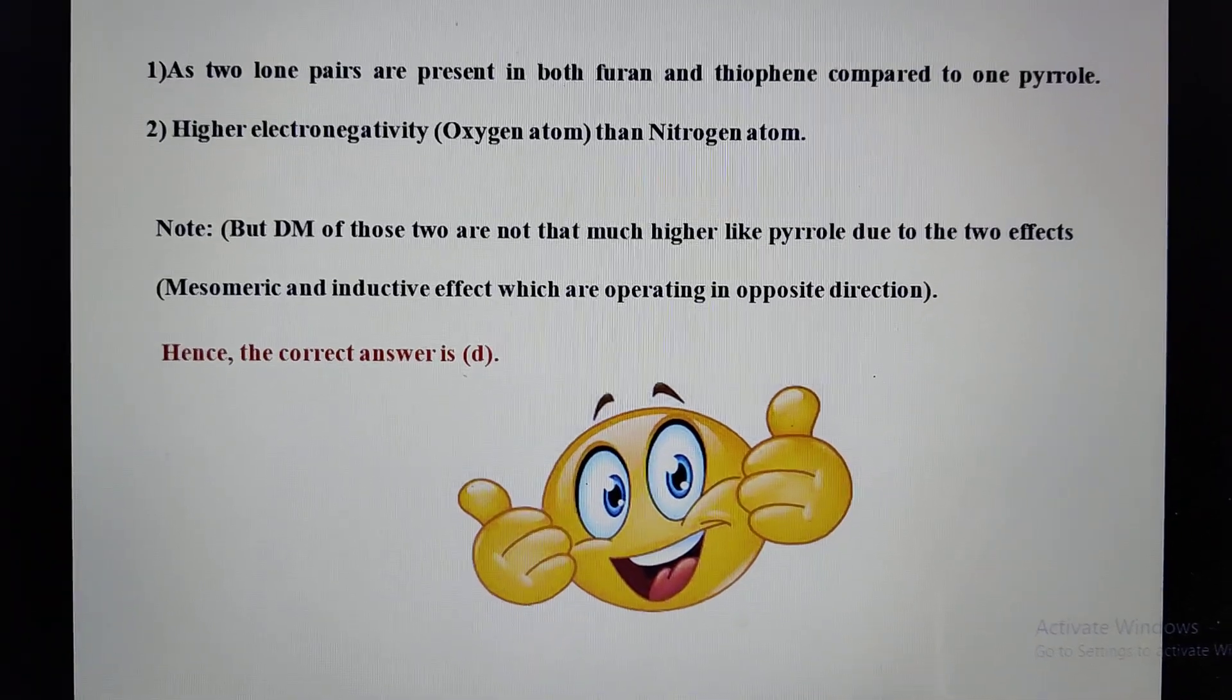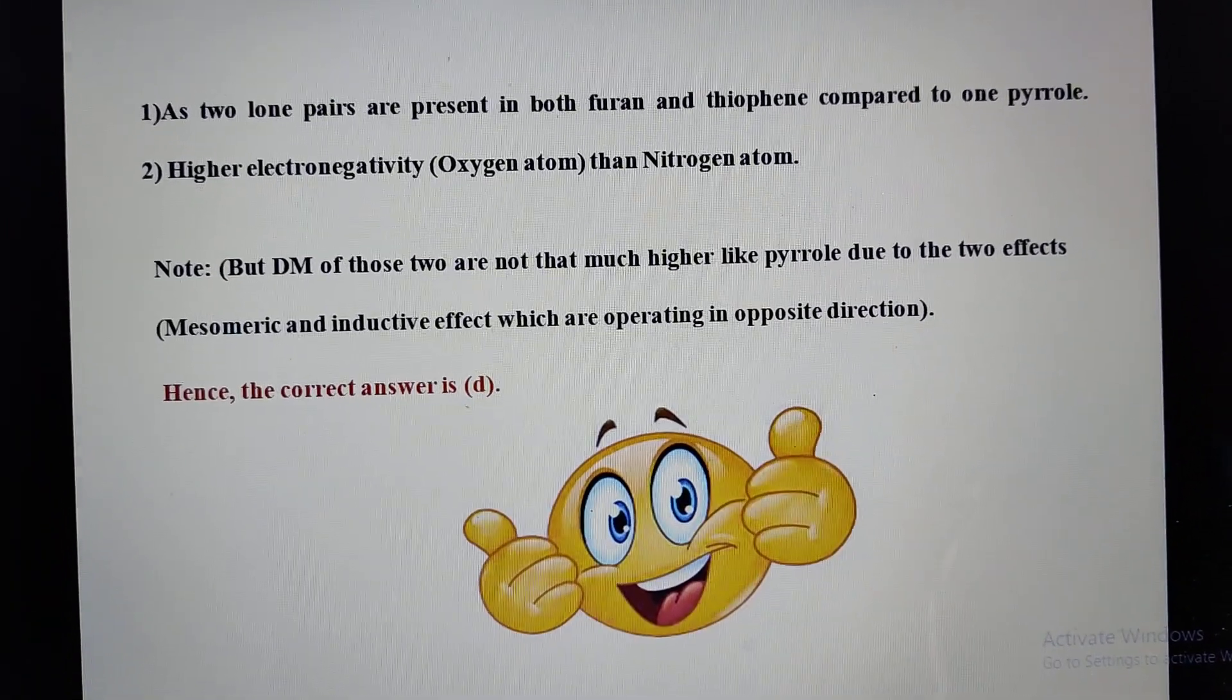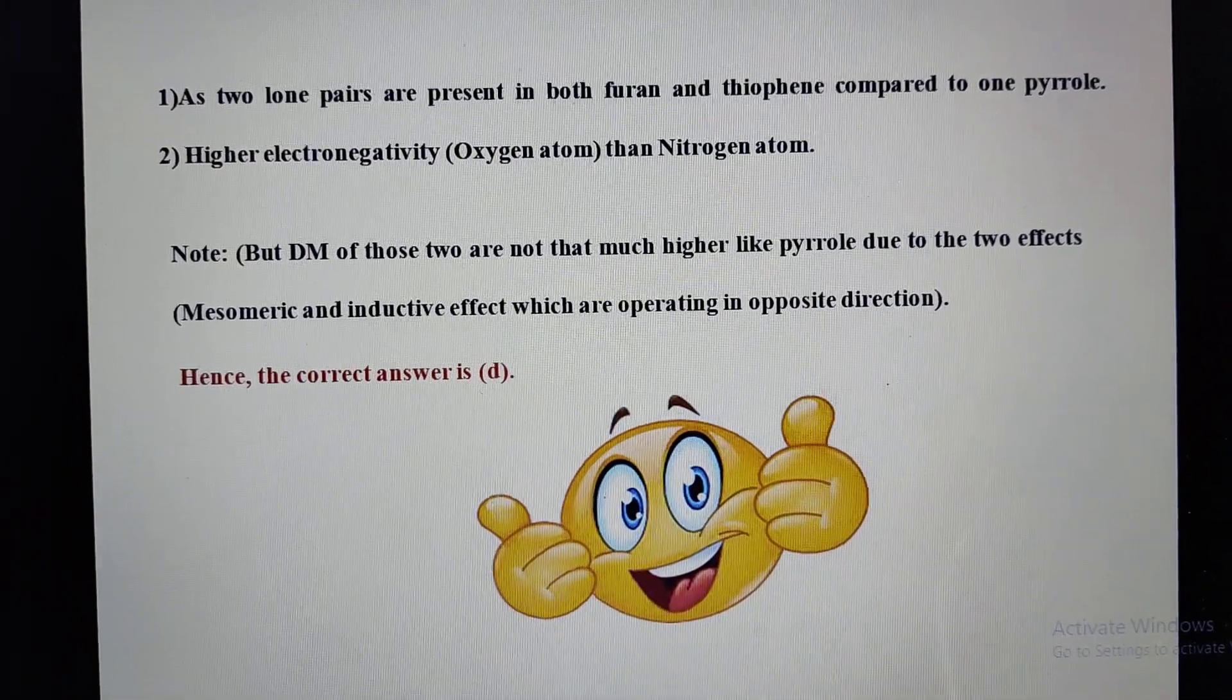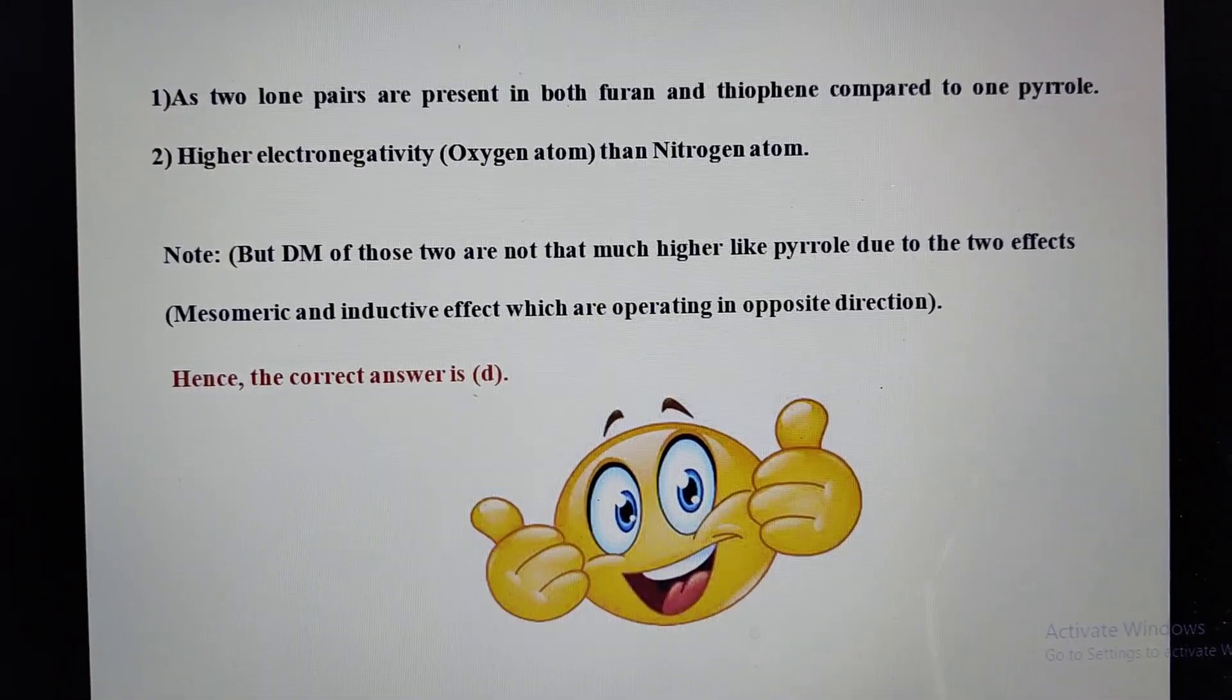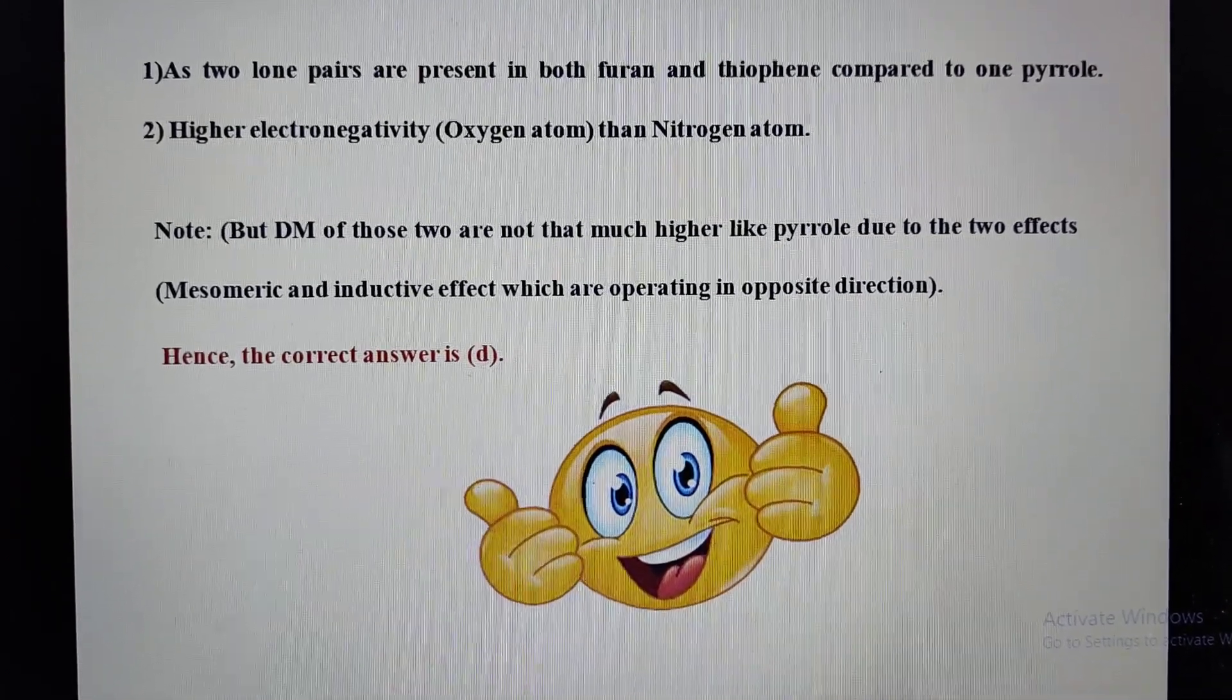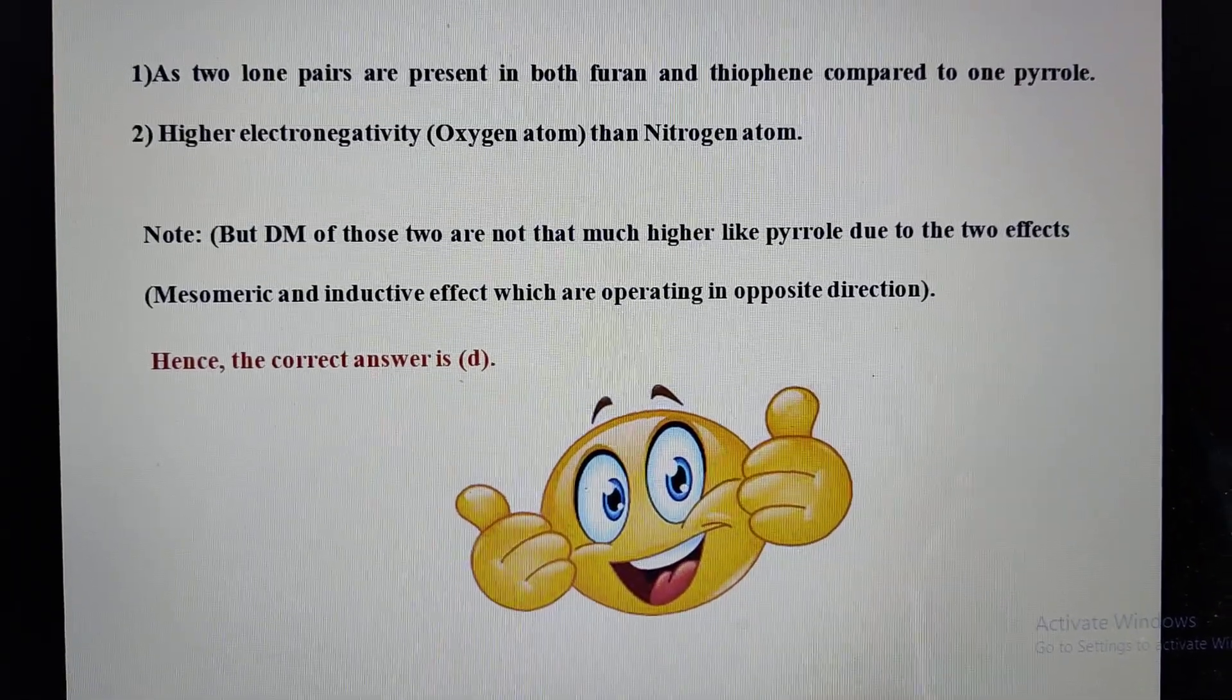But look at here - in the case of furan and thiophene, two lone pairs are present, but in the case of pyrrole only one lone pair is there. So due to the presence of one more pair of electrons...